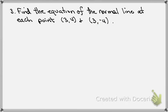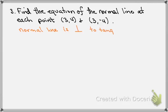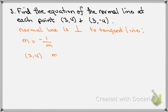Number 3 asks us to find the equation of the normal line at each of the two points (3, 4) and (3, -4). All we need to know is that the normal line is perpendicular to the tangent line. This means that if I know the slope of one of the lines, then the slope of the perpendicular one is the negative reciprocal. So for example, for the point (3, 4), we found the slope of the tangent was minus 3/4, so the slope of the normal line is going to be 4/3.